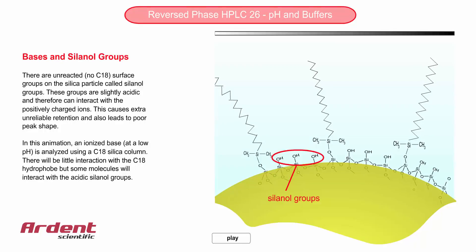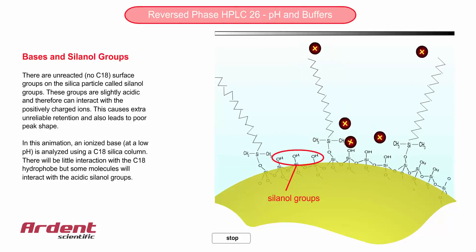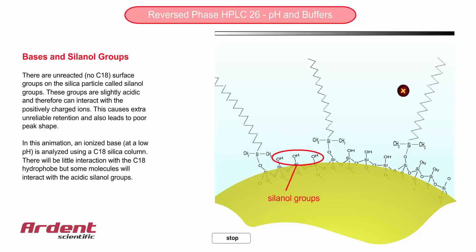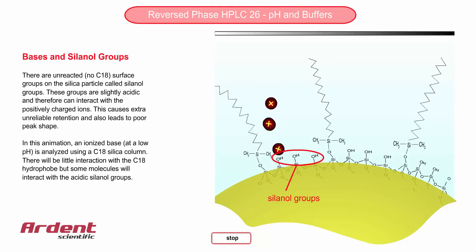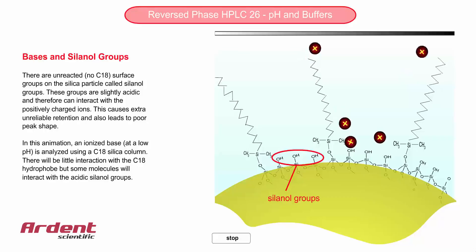You'll notice that some of the silanol groups are underivitized — that is, they don't have any C18 hydrophobe bonded to them. This occurs in reverse phase packings because of what we call steric hindrance, which is a fancy way of saying the C18 hydrophobe is just too big to get close enough to all the silanol groups to react.